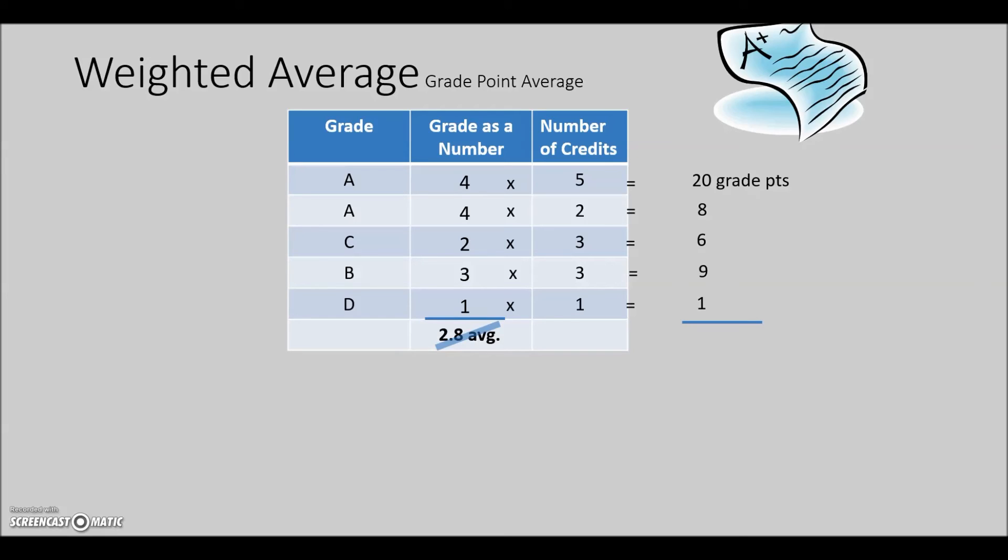Next, add the weighted grade points for all of your classes together to calculate your total grade points. This adds up to be 44 grade points. Next, add together the number of credit hours taken, which was 14 credits.